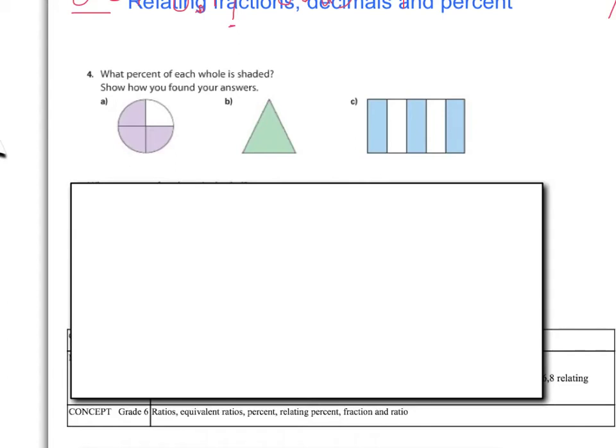All right, let's take a look at the first one. A, we have 3 out of 4. I'm going to use equivalent fractions here. Remember, for percent, it has to be out of a hundred, so my bottom number has to be 100. To get from 4 to 100, I have to multiply by 25. What I do to the bottom, I also do to the top. 3 times 25 is 75, so as a percent, it would be 75%.